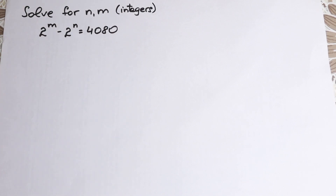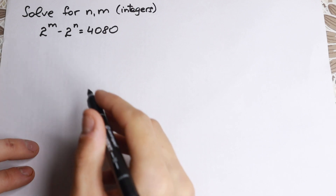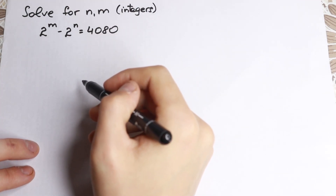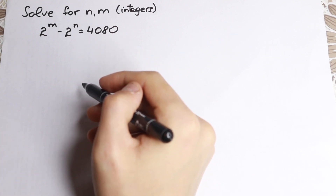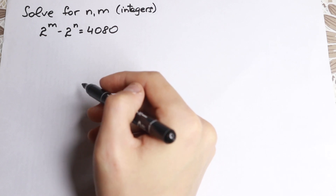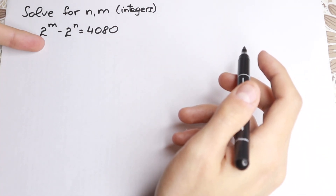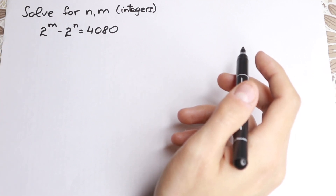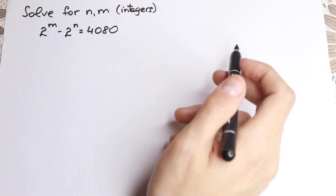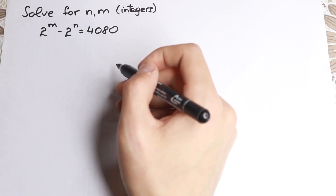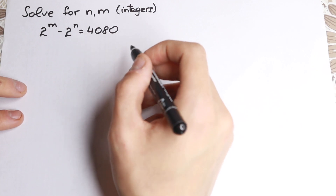Hello everyone, happy to see you here and today we have a really interesting math problem. So we need to solve this for n and m — we need to find integer solutions to this problem. Maybe a lot of students feel they know the answer by inspection, but in this video I'm going to show you how we can solve it, because in math we are interested in a full solution from top to bottom of the paper. We need to solve it — let's try.